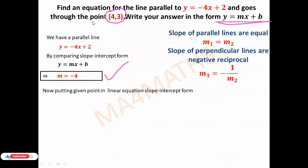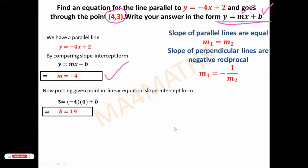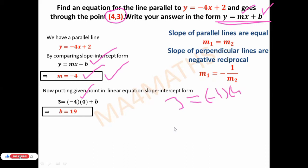To form the slope-intercept equation we need two values: m and b. Putting in y = 3, m = -4, and x = 4: 3 = -4(4) + b, so 3 = -16 + b. Adding 16 to both sides gives b = 19.